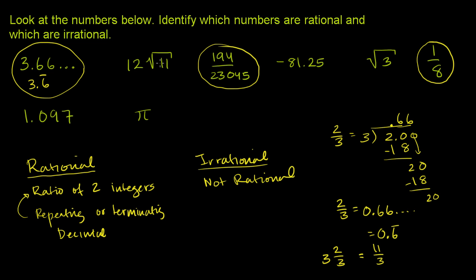The 12 times the square root of 11 cannot be. The simple way to recognize that is it's the square root of a prime number. And the square root of a prime number will always be irrational.